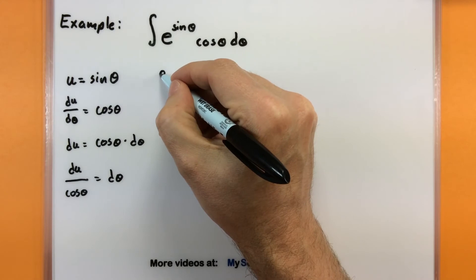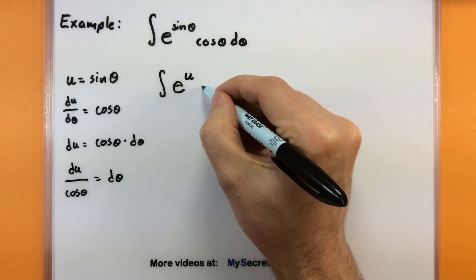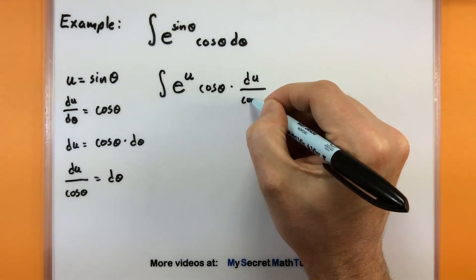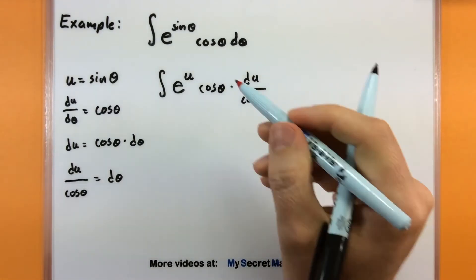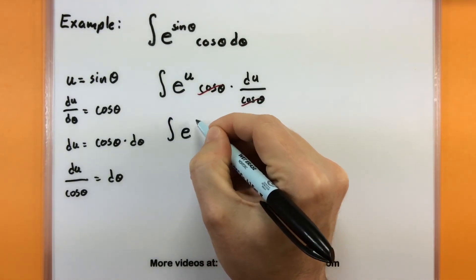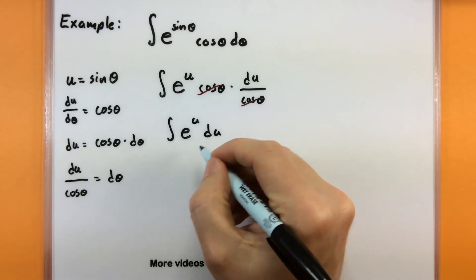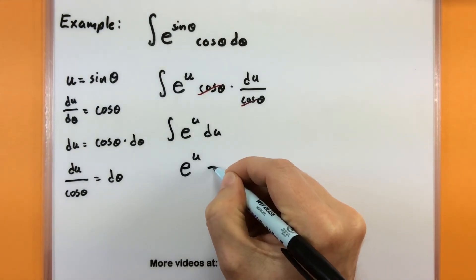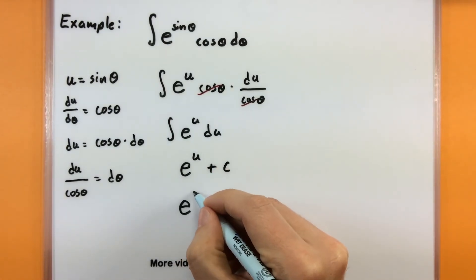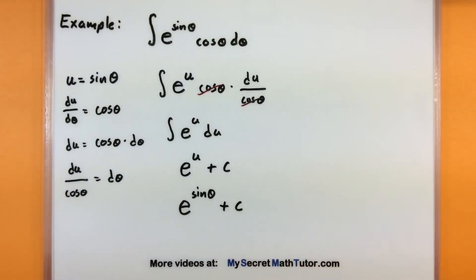Back to our original integral with the new pieces: this becomes e to the u — that's what we're calling that piece — then we have cosine, and we replace dθ with du over cosine of theta. The cosines cancel out, leaving us with just the integral of e to the u du. That's one of the nicest integrals you'll come across — it's simply e to the u plus constant. Finishing up, we replace u with sine of theta. Done.